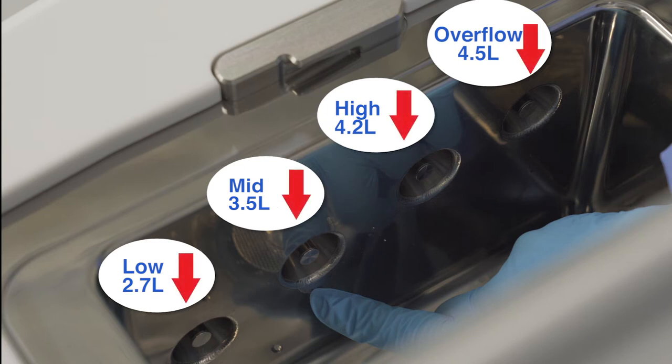The four level sensors located on the front wall are as follows: low is 2.7 liters, mid is 3.5 liters, high is 4.2 liters, and overflow sensor which is 4.5 liters.